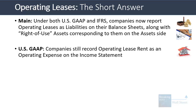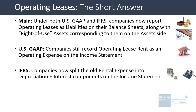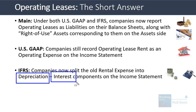Under US GAAP, companies still record operating lease rent as an operating expense on the income statement. But under IFRS, companies now split the old rental expense on leases into depreciation and interest components — separate line items on the income statement. Depreciation shows up within operating expenses, while interest expense shows up below the operating income line.